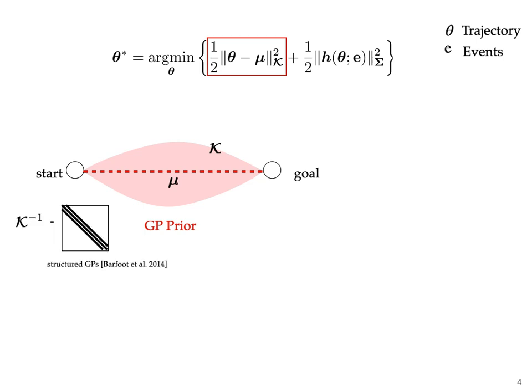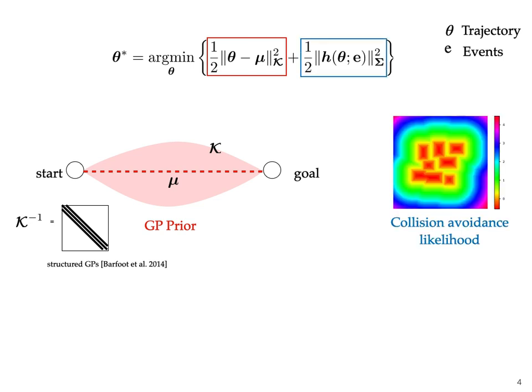GPMP2 uses structured GP priors such that the inverse of the kernel matrix is exactly block tridiagonal, making it ideal for fast inference. The second term captures planning requirements in the form of events E that the trajectory must satisfy. These include constraint satisfaction such as collision avoidance, joint or velocity limits, or other task-relevant objectives.